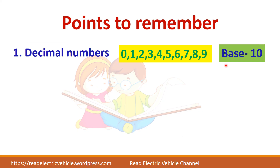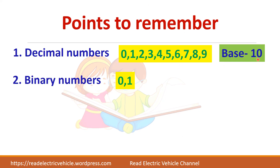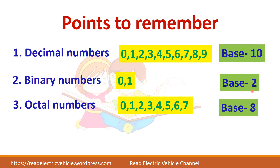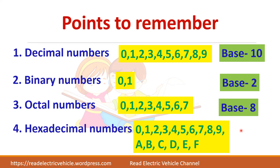To summarize the points: decimal numbers have a total of 10 digits (0–9), binary numbers have 2 digits (0 and 1), octal numbers have 8 digits (0–7), and hexadecimal numbers have 16 digits (0–9 and A–F).